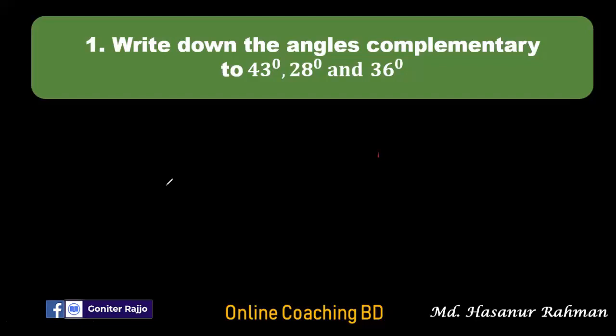So what does complementary mean? If the summation of two angles is 90 degrees then we can say one angle is complementary to another one. Now we have to find out the complementary angle of 43 degrees. So complementary angle of 43 degrees should be equal to 90 degrees minus 43 degrees, then we will get 47 degrees.